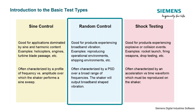Next we have random control. In random tests, a wide range of frequencies are excited and measured simultaneously. The majority of the vibration experienced by a test item is broadband spectral content. We characterize this using a PSD — a power spectral density — which characterizes amplitude versus frequency.